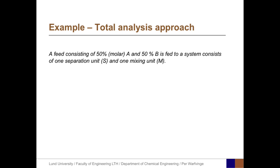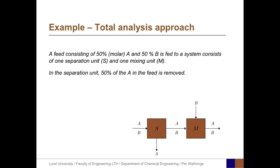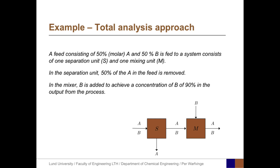An example based on the total analysis approach: consider a system where we have a feed consisting of 50% A and 50% B, fed to a system consisting of two units — one separation unit and one mixing unit. In the separation unit, 50% of the A in the feed is removed. In the mixer, B is added to achieve a concentration of B of 90% in the output from the process. Calculate all the fluxes in the system.